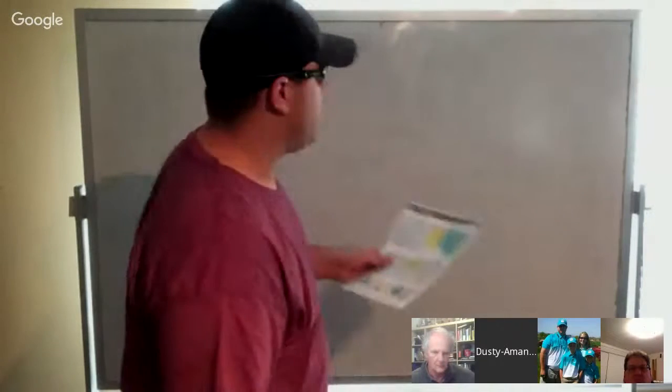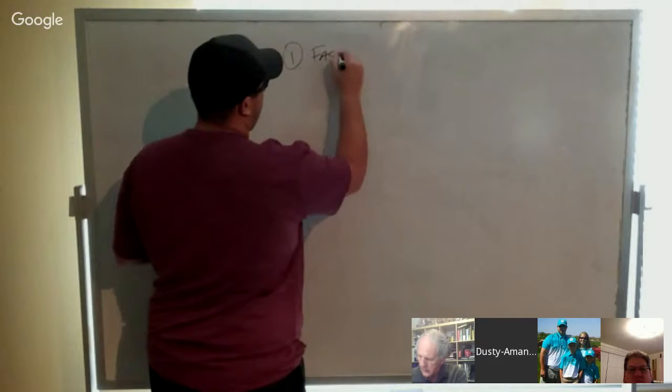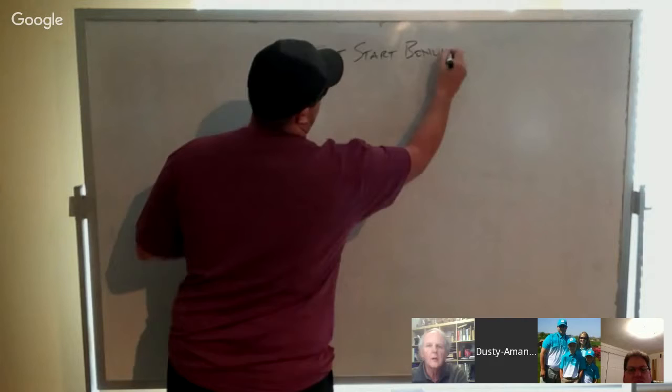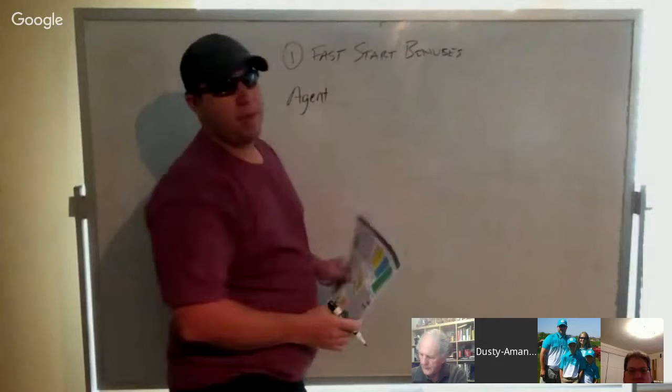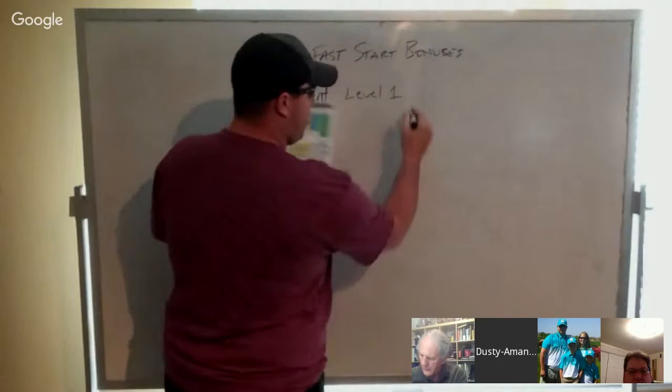So here's a fast start bonus. I didn't want any hidden money in the comp plan. I kind of wanted everything to be really straightforward. So as an agent in the company, you've sponsored zero people, you get 30% on all personal enrollees on your level one.